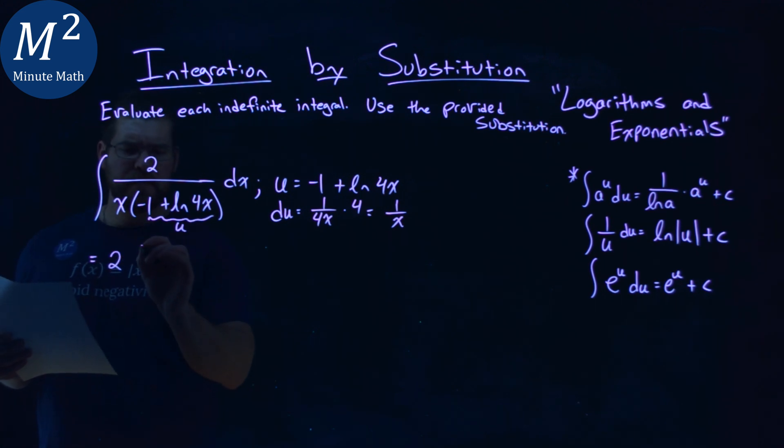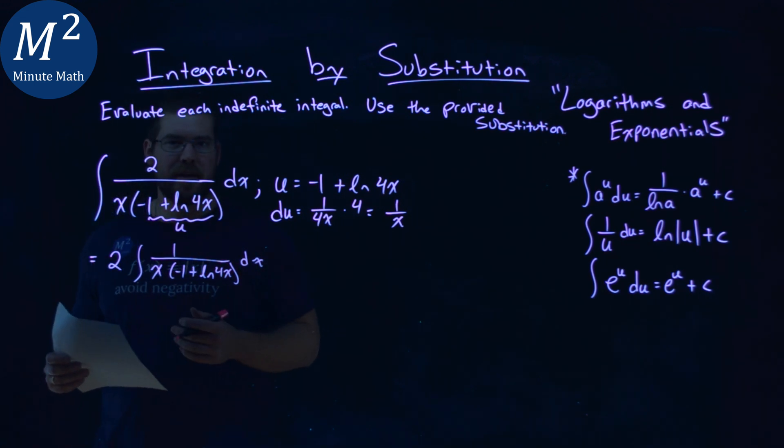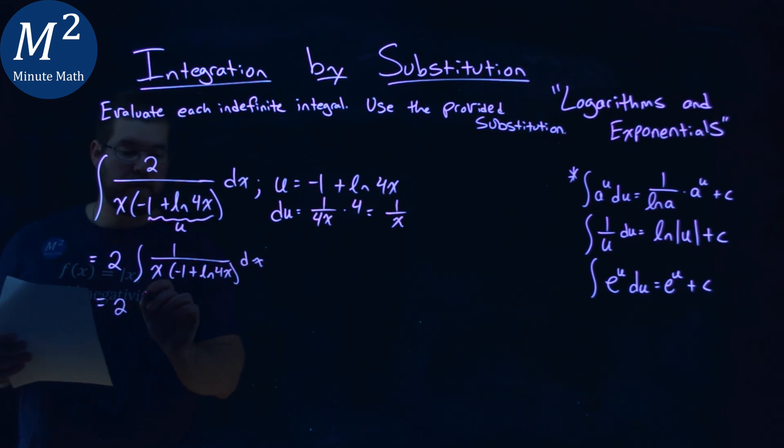So if I do that, I have 2 times the integral of 1 over x times the negative of 1 plus natural log of 4x dx. And now we can replace this with some u's. Two stays on the outside here.